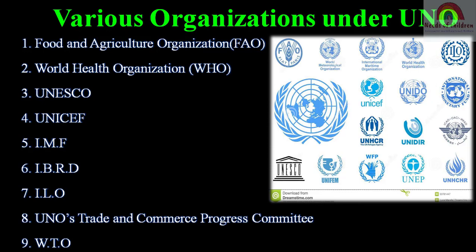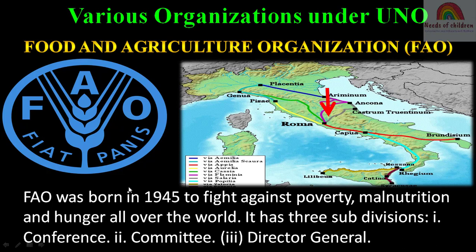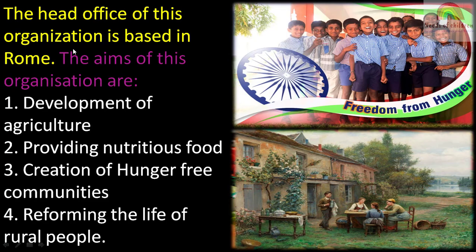The first one is the Food and Agriculture Organization, also called FAO. FAO was born in 1945 to fight against poverty, malnutrition, and hunger all over the world. It has three subdivisions: conference, committee, and director general. The head office of this organization is based in Rome. The main aims of FAO include development of agriculture, providing nutritious food, creation of hunger-free communities, and reforming the life of rural people.